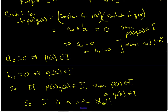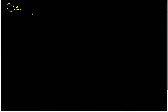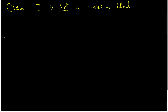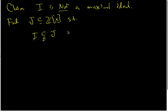Now the question becomes: is I a maximal ideal? I claim that I is not a maximal ideal. I have to find a J that is a subset of Z[X] such that I is a proper subset of J, and J is a proper subset of Z[X], and J is an ideal.